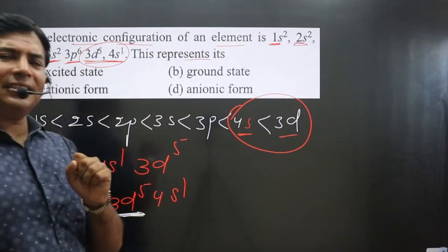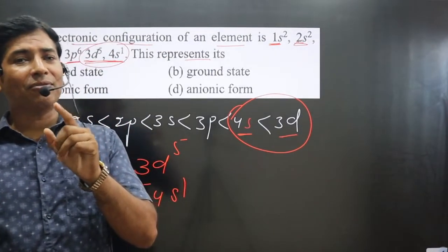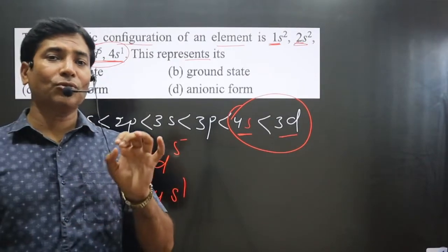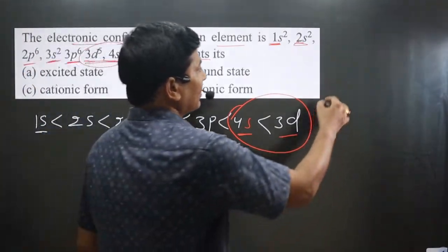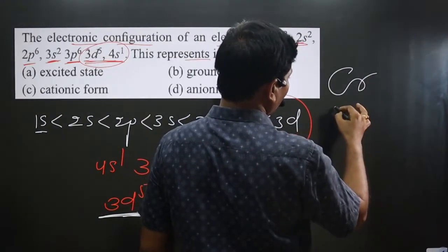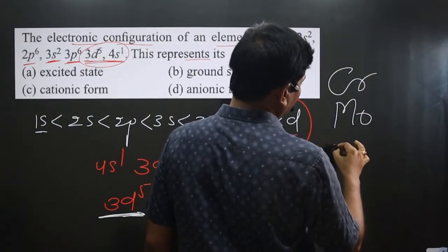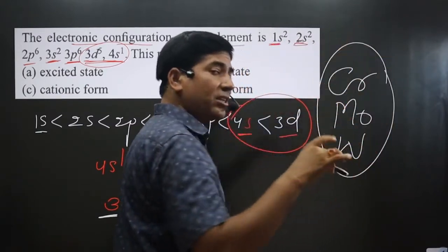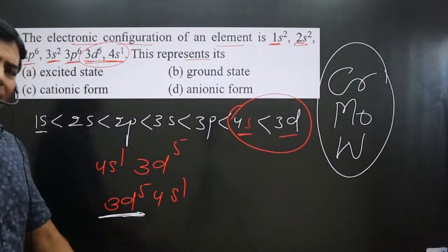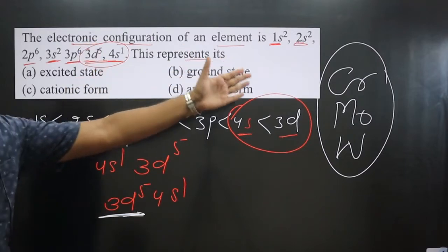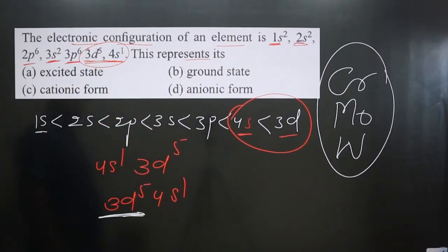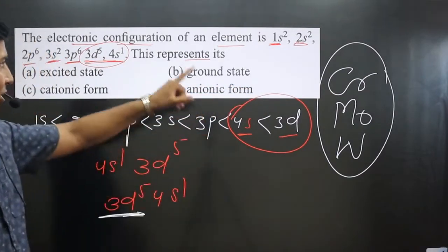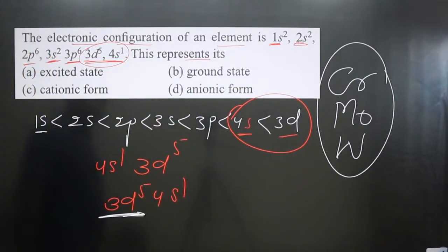This half-filled condition is applied only in the case of chromium, molybdenum, and tungsten. Looking at the outermost shell, we have principal quantum number 4, which corresponds to the 4th period — that element is chromium. The electronic configuration given here is for chromium.